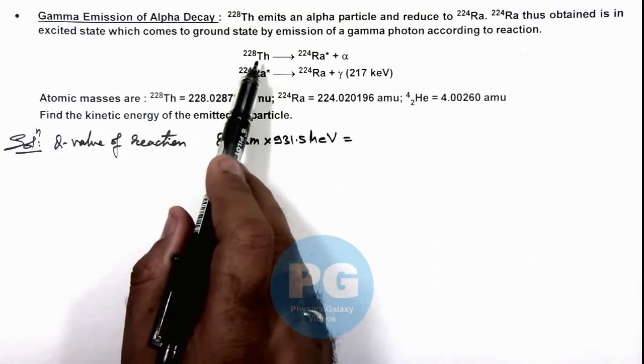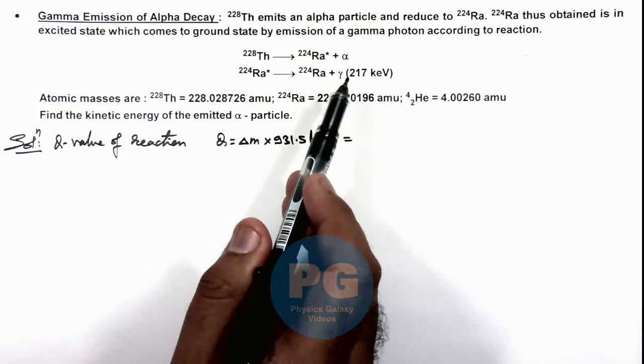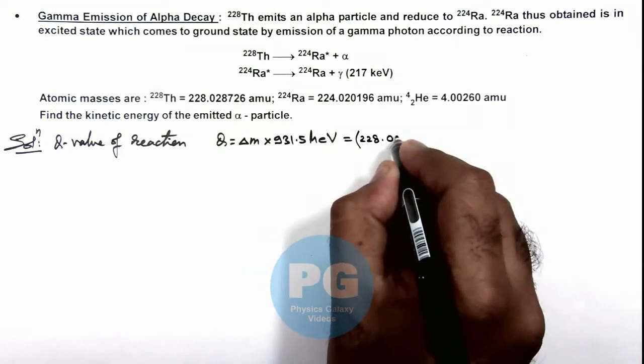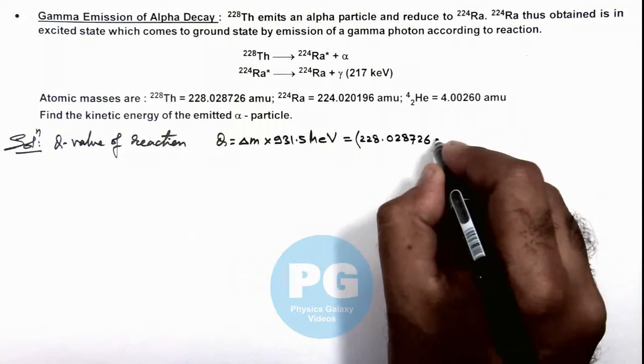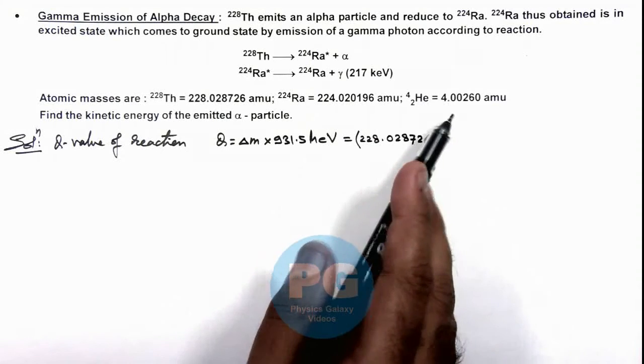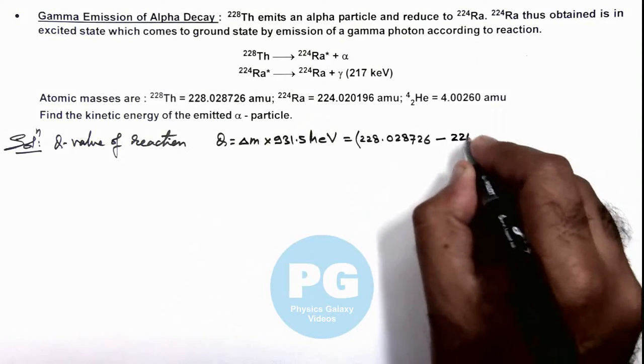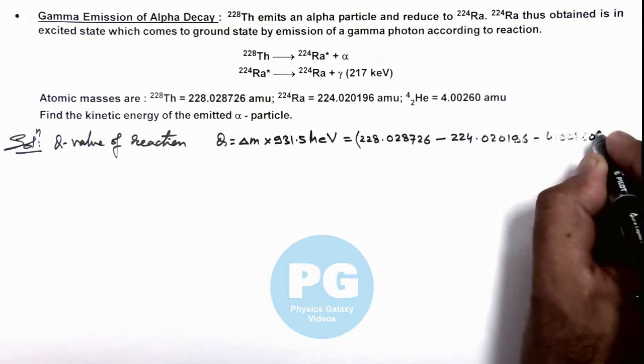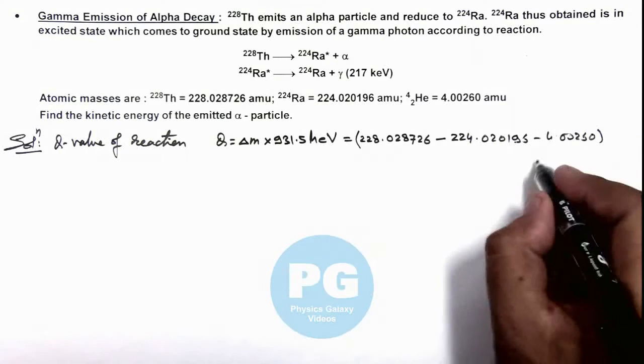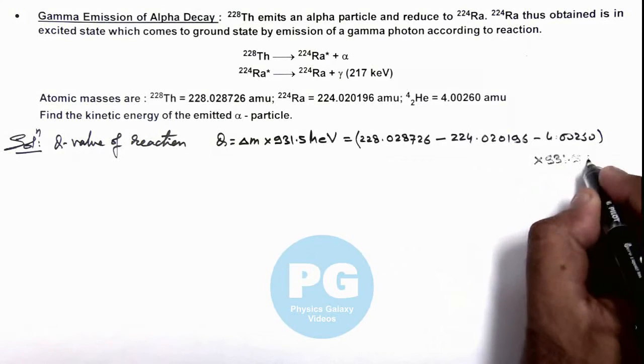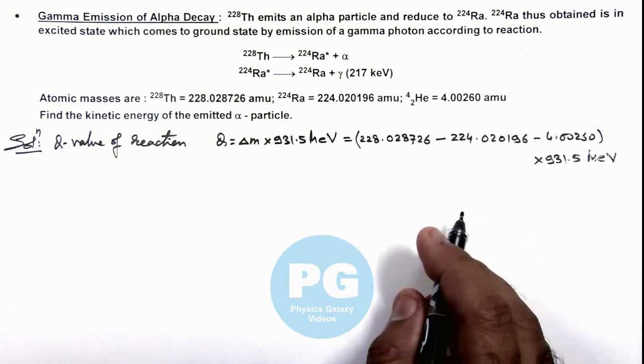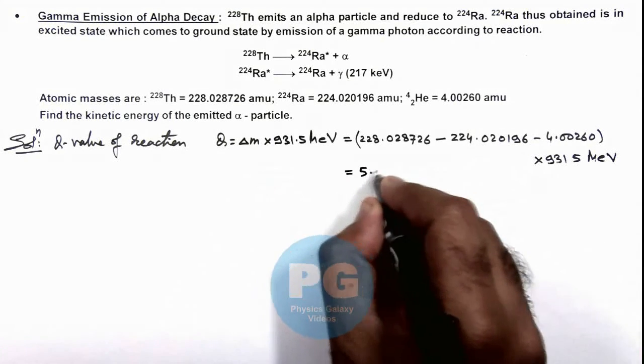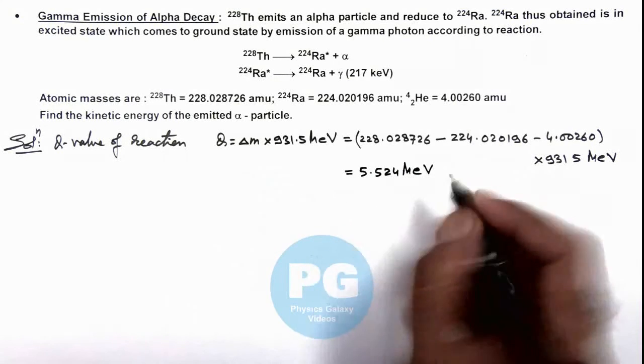If we substitute the values of mass defect, we can see thorium is producing radium and an alpha particle. So we can use the mass of thorium which is 228.028726 minus the masses of radium and alpha, which we can write as 224.020196 minus 4.00260 amu. If we multiply it with 931.5, this will be the total Q value of the nuclear reaction in million electron volts. If you simplify this, this gives you 5.52524 million electron volts, that is the energy released in this reaction.